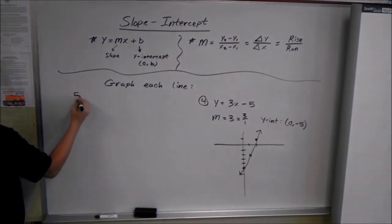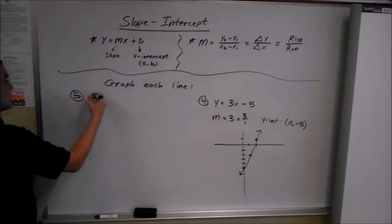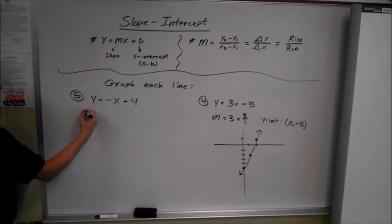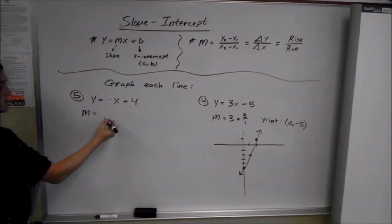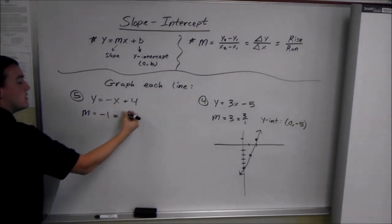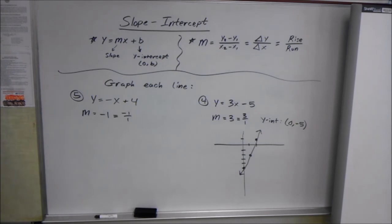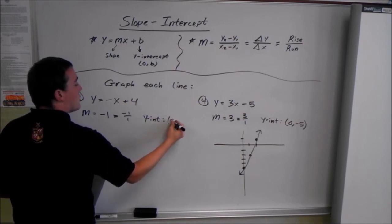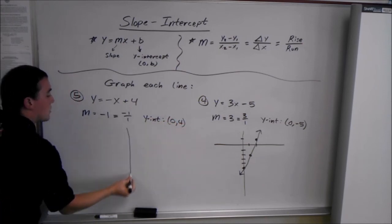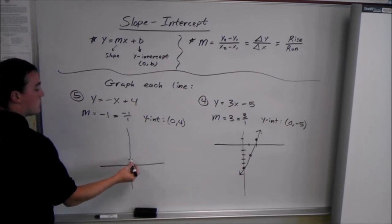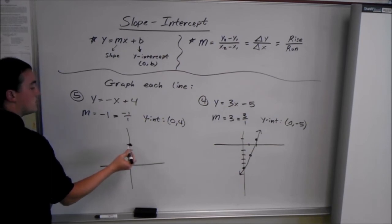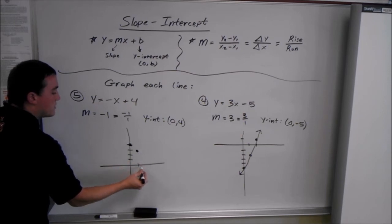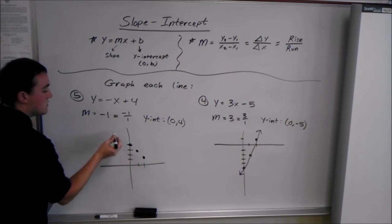Number 5: y equals negative x plus 4. Your slope is the number in front of the x; since there's no number, that means it's 1, so our slope is negative 1, or negative 1 over 1 as rise over run. Our y-intercept is 0, 4. Starting there, we go down 1 over positive 1 to get the next point. Drawing a couple of those gives us our line.